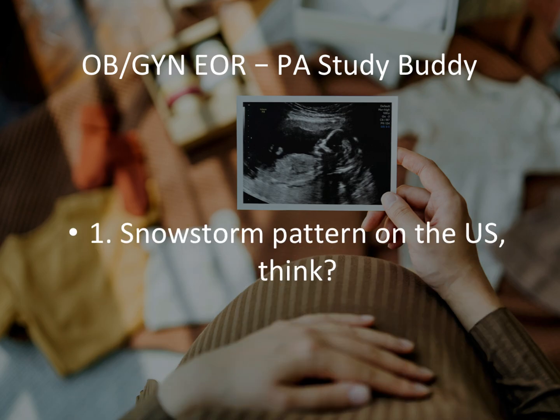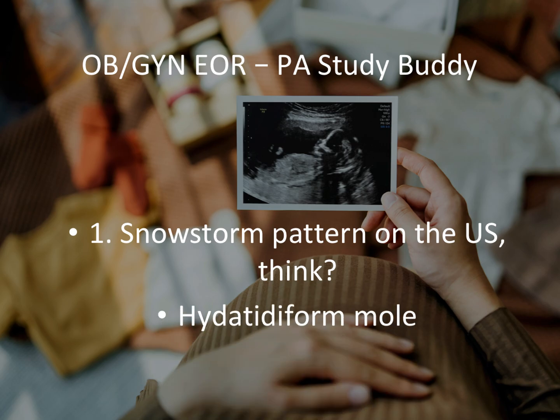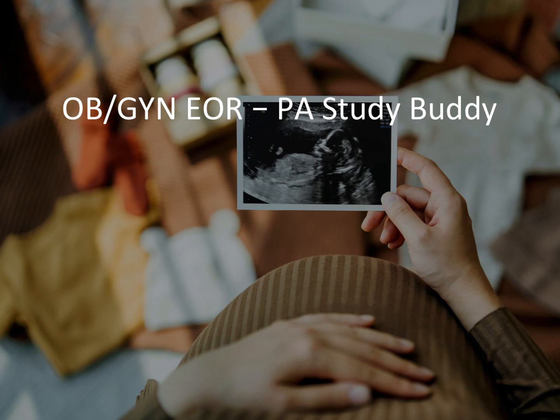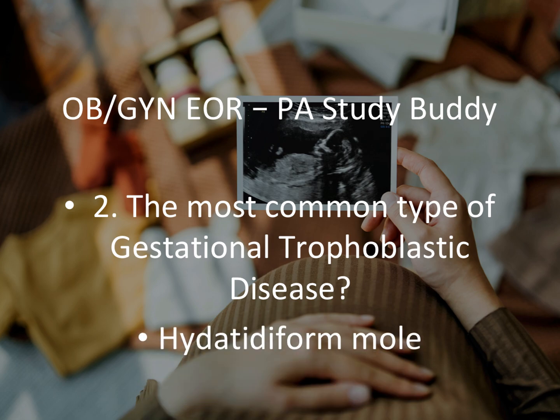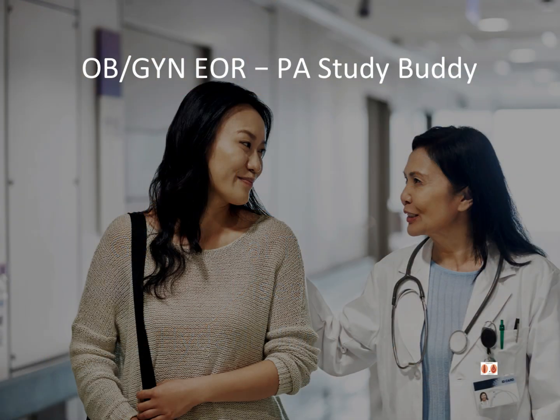Question 1: Snowstorm pattern on an ultrasound should make you think of what? Snowstorm pattern on ultrasound is hydatidiform mole. Question 2: The most common type of gestational trophoblastic disease is also hydatidiform mole. They can give you a stem about gestational trophoblastic disease and ask what the most common type is — hydatidiform mole.